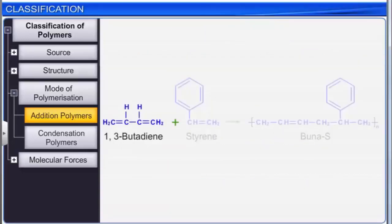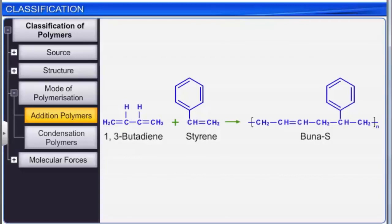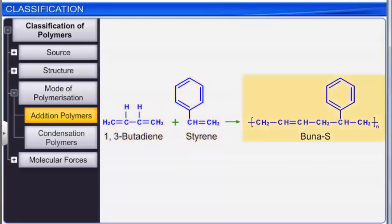The general scheme for the addition reaction for Buna-S is shown here. 1,3-butadiene and styrene combine to form a butadiene-styrene copolymer.